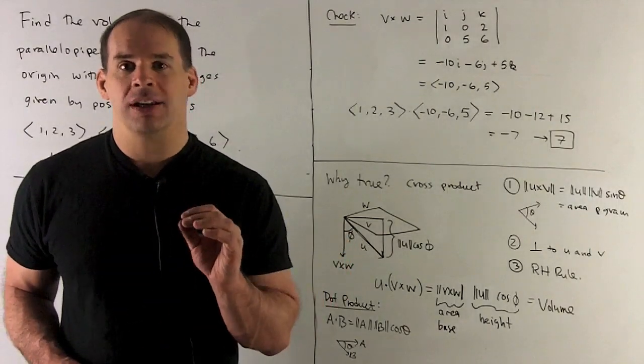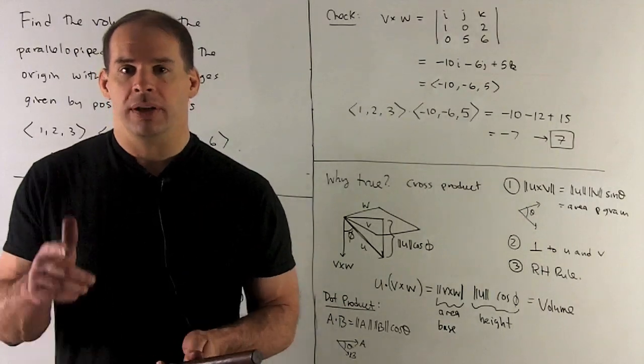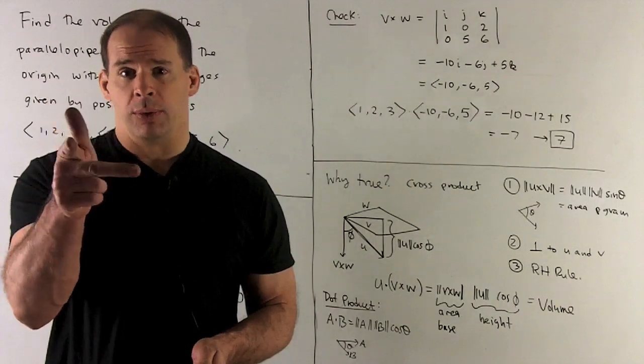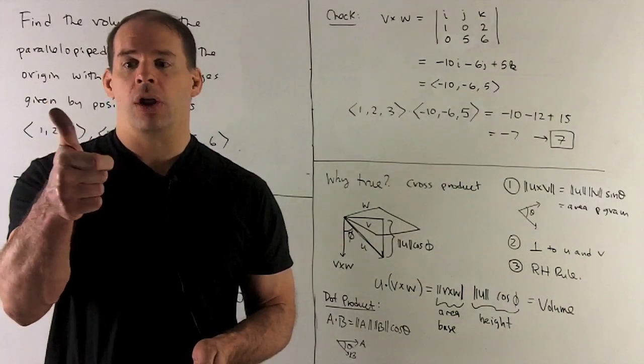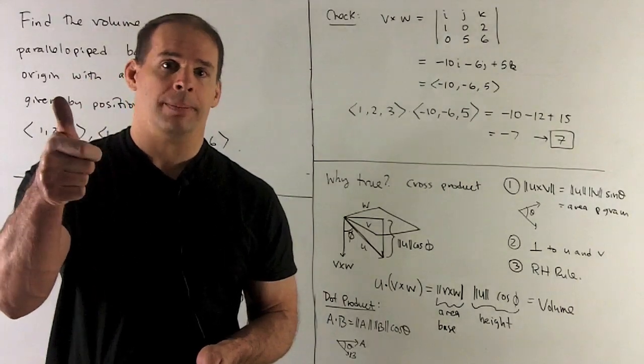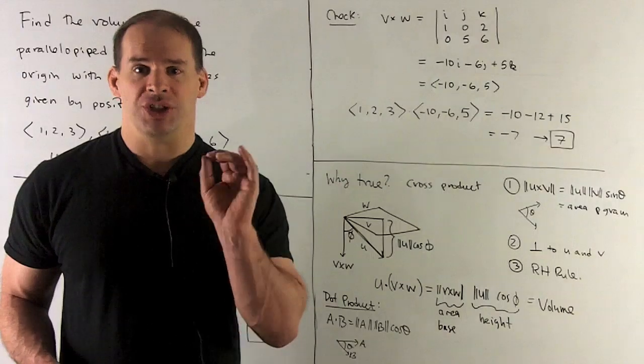The way we determine the direction, it's going to be our third point, the right-hand rule. So if I put V on my pointer finger, W on my middle finger, we curl, then the cross product is going to point in the direction of my thumb. So that tells you everything you need to get your cross product geometrically.